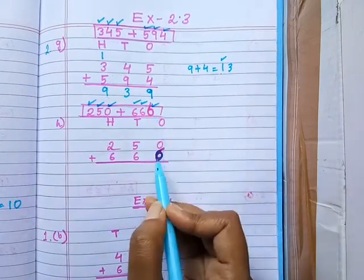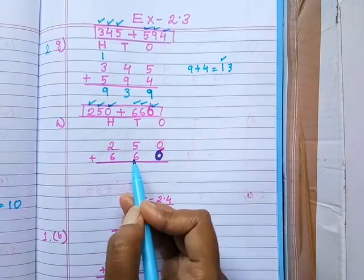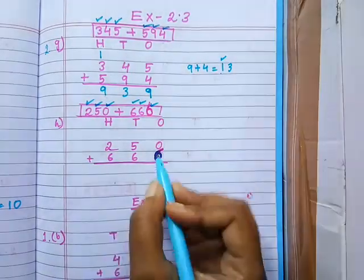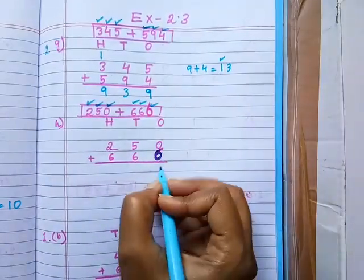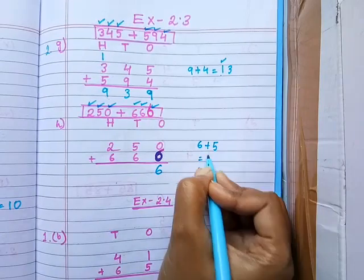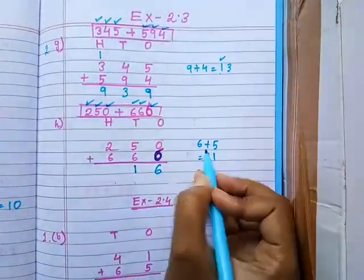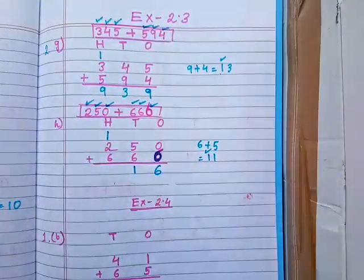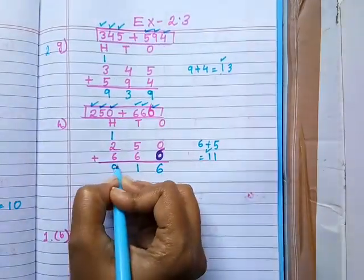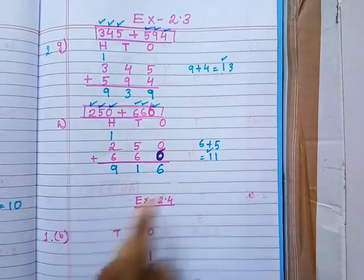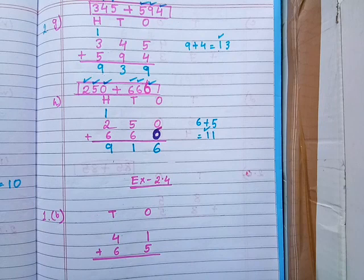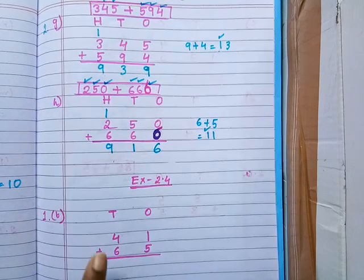Next number: the 1's place digit is 6, write down 6 in 1's place. The 10's place digit is 6, write down 6 in 10's place. The 100's place digit is 6, write down 6 in 100's place. Now add the 1's place digits: 6 plus 0 equals 6. Add the 10's place digits: 6 plus 5 equals 11. Write down 1 in 10's place and carry 1 to 100's place. Add the 100's place digits: 6 plus 2 is 8, plus 1 is 9. So 916 is our answer.